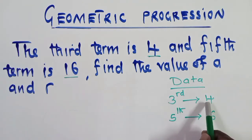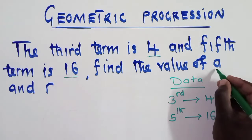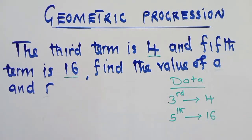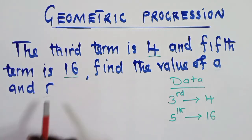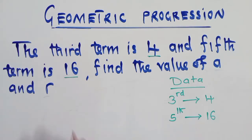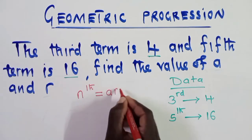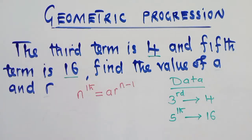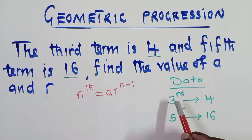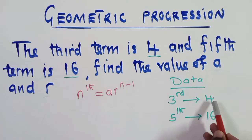At position 3 there is a 4, at position 5 there is a 16. The question wants us to find the value of a and r. Here, a is the first term and r is the common ratio. We are going to use the formula: T_n = a · r^(n−1). From our data we have two terms, so we need to form two equations.